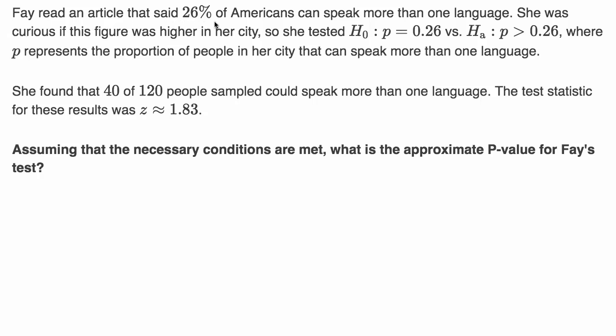Faye read an article that said 26% of Americans can speak more than one language. She was curious if this figure was higher in her city, so she tested. Her null hypothesis H₀ is that the proportion p = 0.26 in her city is the same as all Americans. Her alternative hypothesis Hₐ is p > 0.26, where p represents the proportion of people in her city that can speak more than one language.